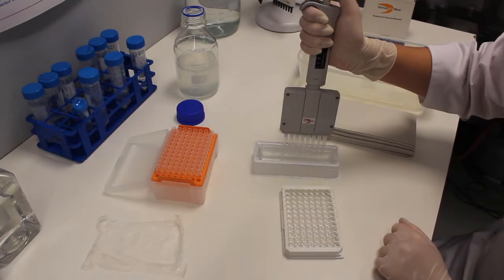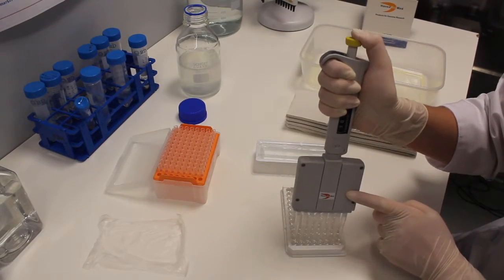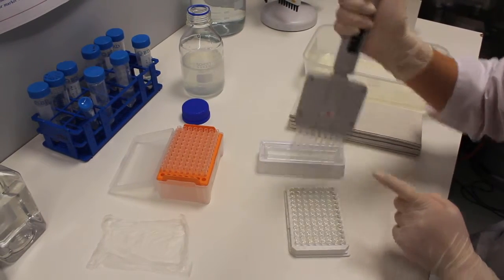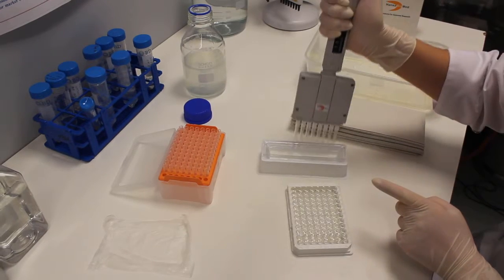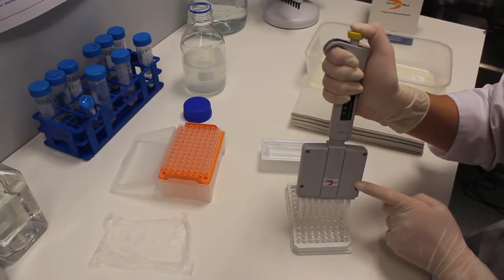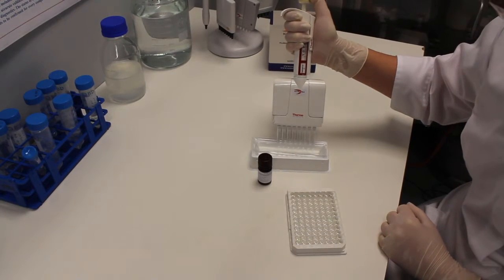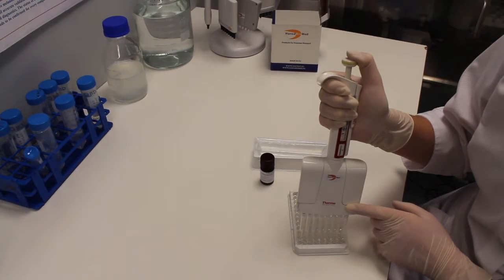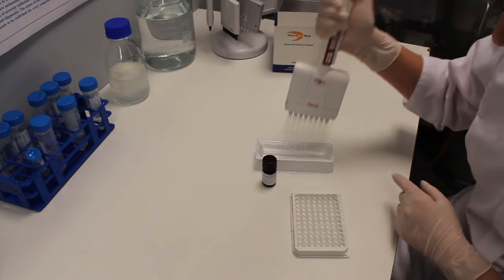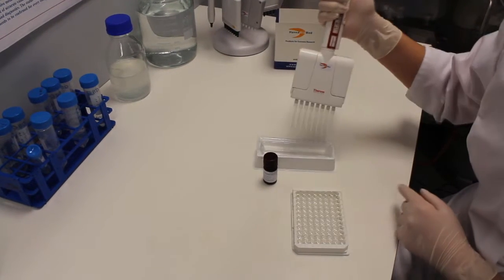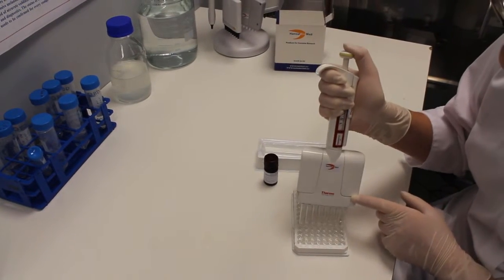Wash the plate with washing buffer as described in Step C. Add substrate solution, 100 microliters per well, and incubate in the dark for 5-10 minutes until blue color is visible.